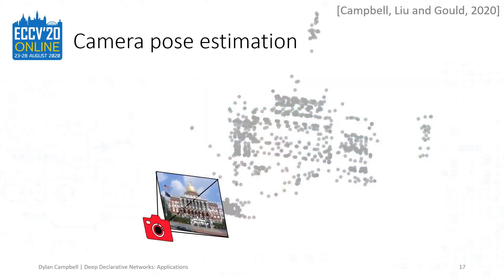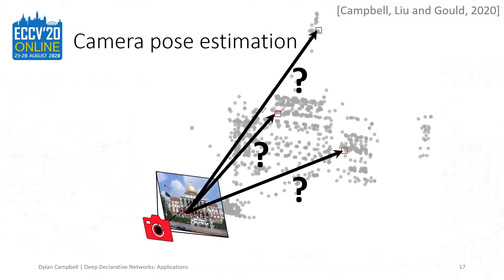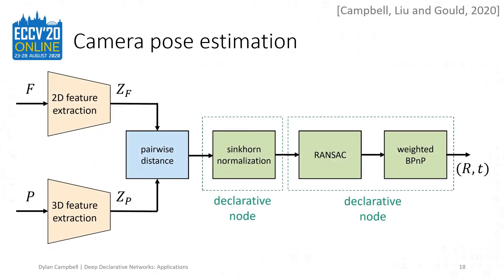Our final example is camera pose estimation. We consider the problem of estimating the camera pose from which a set of 2D points were viewed, relative to a 3D point set, without prior knowledge of the 2D-3D correspondences — this is known as the blind PNP problem. Jointly solving for position, orientation, and correspondences is extremely challenging because the search space is very large. We propose the first fully end-to-end trainable network for solving the blind PNP problem efficiently without pose priors. This would not be possible without the deep declarative networks framework, which allows us to incorporate geometric model fitting — including Sinkhorn, RANSAC, and PNP algorithms — into an end-to-end learning framework.